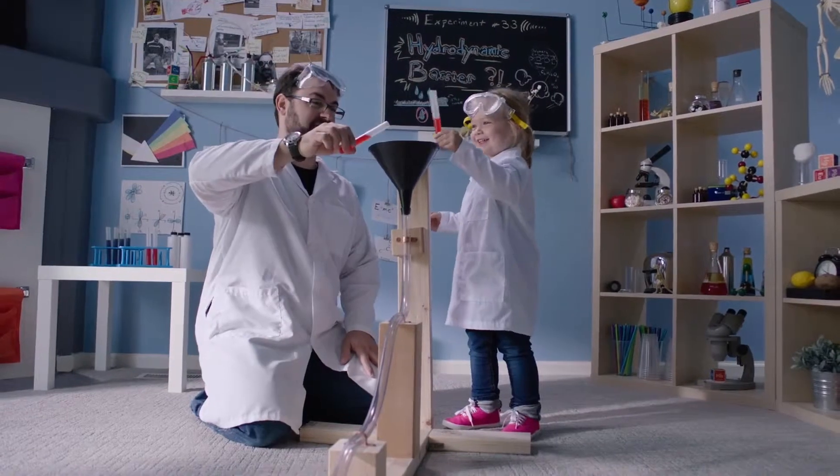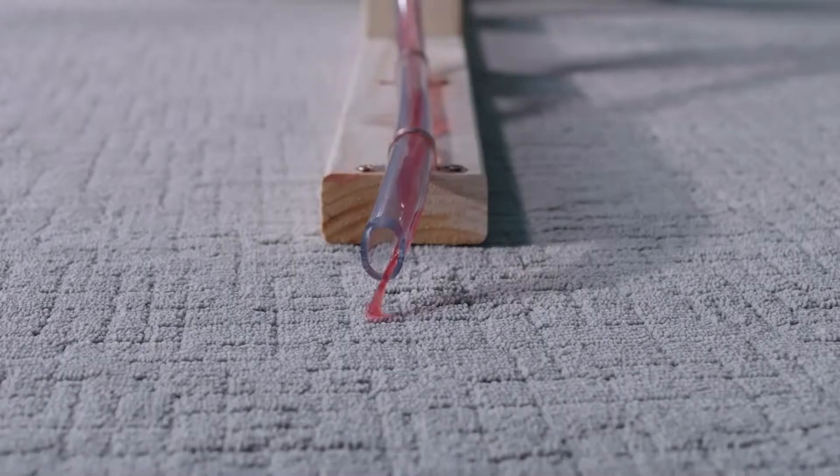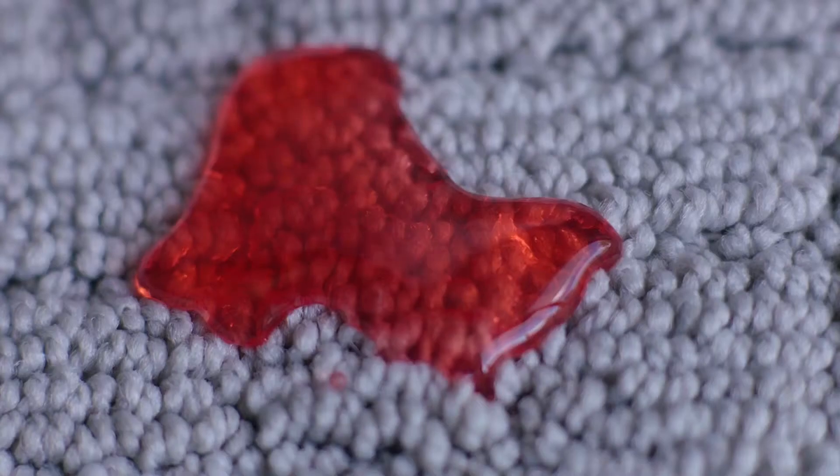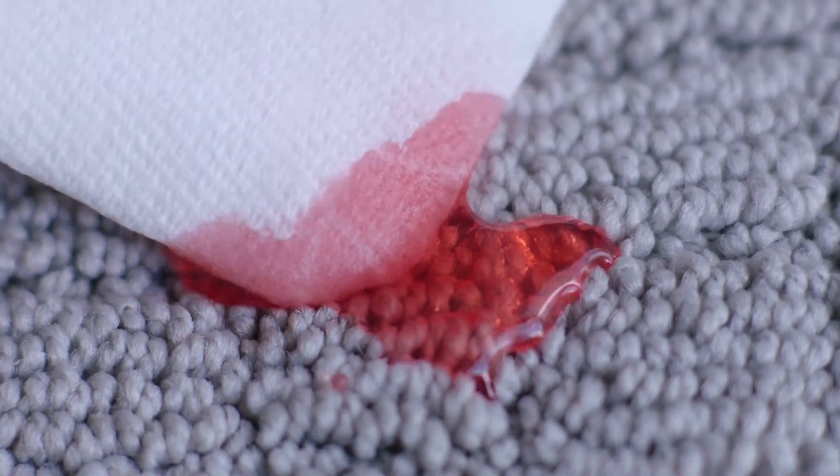When you spill something on this carpet, it just kind of sits on top. So when you get the paper towels there fast enough, the fibers in the paper towel just soak it right up.